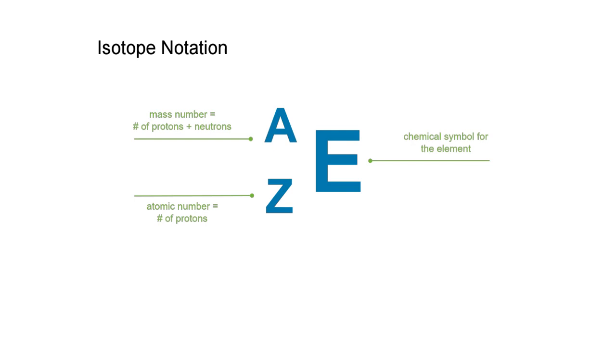Now we can use a special type of notation called isotope notation to denote a single atom which might have different properties. So the really big part of the isotope notation is where we write the chemical symbol for the element.